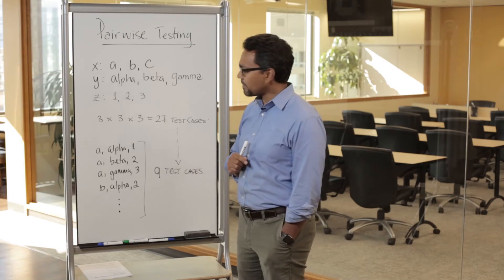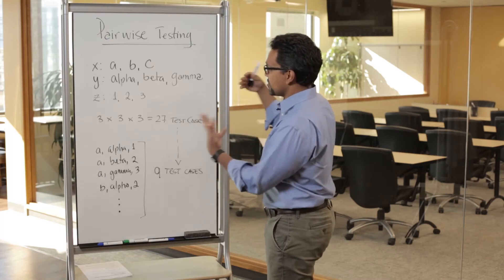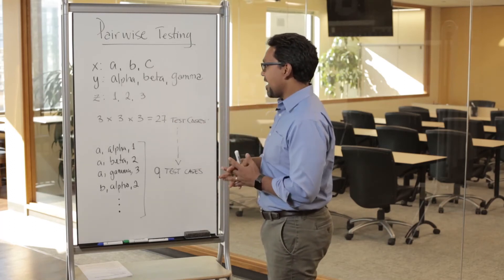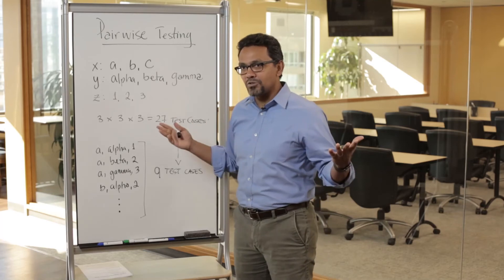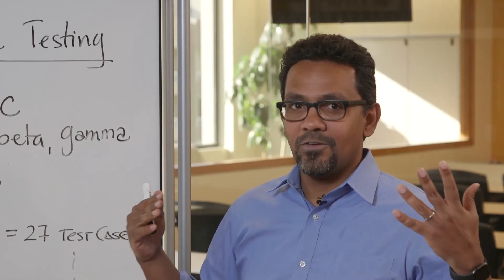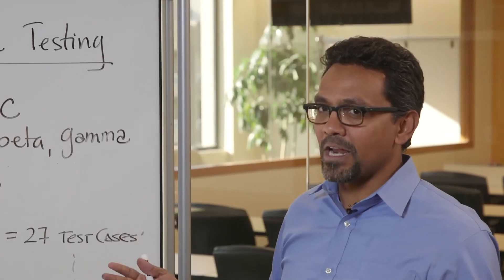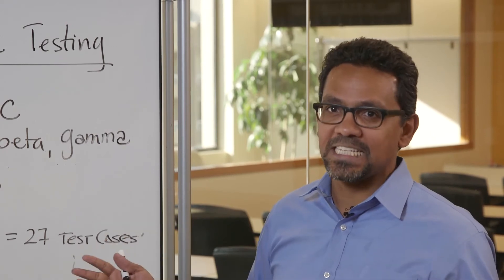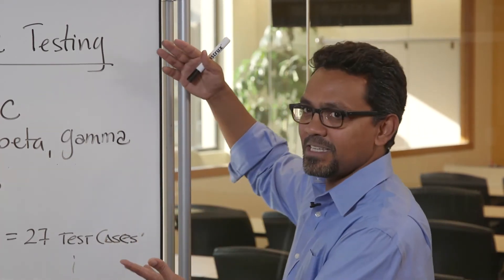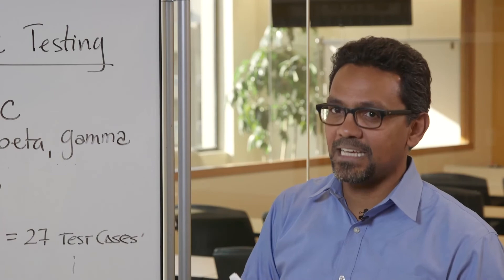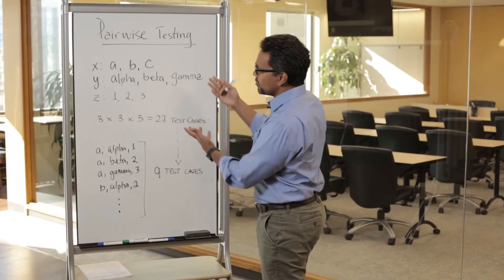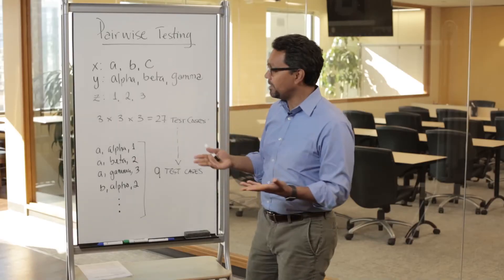Now if you have a large number of factors—let's say that you have, I don't know, nine factors, and each factor is taking three possibilities—then we're talking about about 20,000 test cases. You can go from 20,000 test cases to 15 test cases.